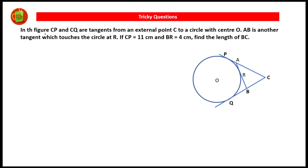Here is the first question on the screen. In the figure, CP and CQ are the tangents from an external point C to a circle with center O. AB is another tangent which touches the circle at R, and CP is equal to 11 centimeters, BR is equal to 4 centimeters. Find the length BC.